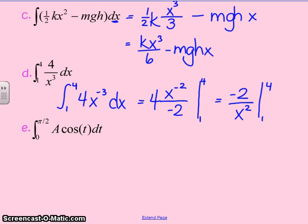And so, I start off always plugging in the upper limit minus the lower limit. Negative 2 divided by 4 squared minus negative 2 divided by 1 squared. This gives me negative 17 over 8.